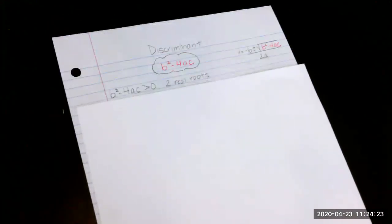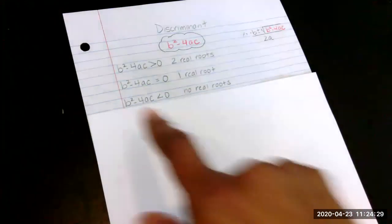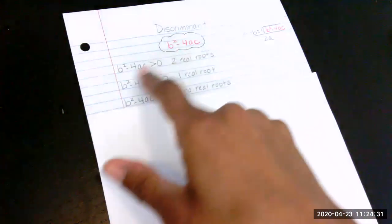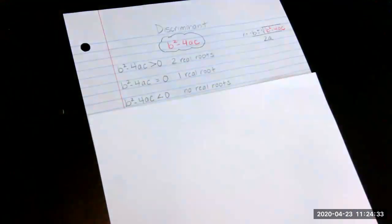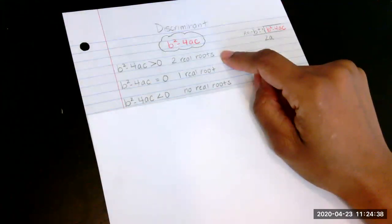So what we're going to do is use the formula to find out how many roots the quadratic equation has. Here's the thing to remember: when you plug in b squared minus 4ac, if that number is larger than zero, that means the equation has two real roots.